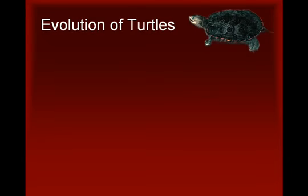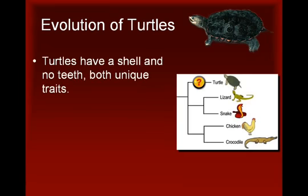A second example involves the evolution of turtles. Turtles are unique among existing reptile groups in that they have a beak instead of teeth and their bodies are protected by a bony shell. In modern-day turtle embryos, the lower shell forms first, and then the ribs and backbone expand and widen to form the upper shell. Based on this evidence, some herpetologists have hypothesized that the lower shell probably formed first in turtle evolution, followed by an outgrowth and broadening of the ribs and backbone to form the upper shell.